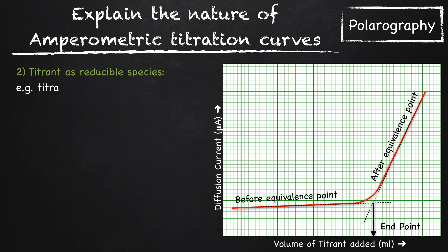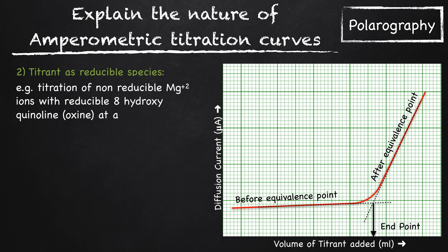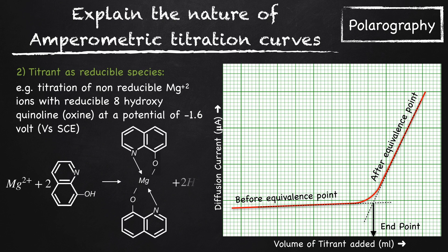For example, titration of non-reducible Mg²⁺ ions with reducible 8-hydroxyquinoline or oxine at the potential of -1.6V against saturated calomel electrode. So Mg²⁺ combines with two molecules of hydroxyquinoline producing a complex and two H⁺ ions are produced.